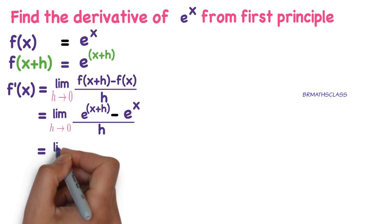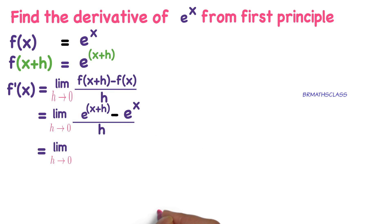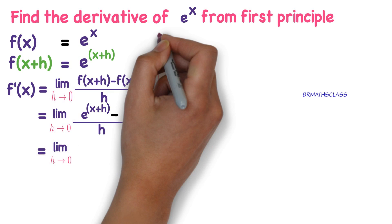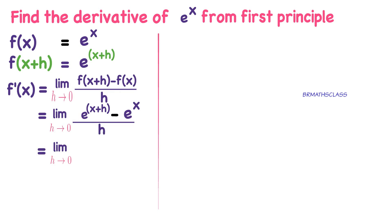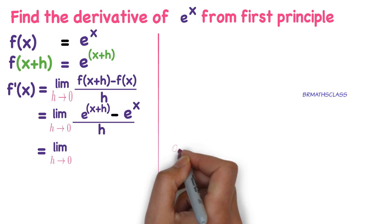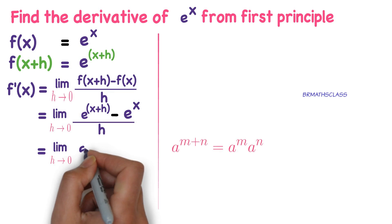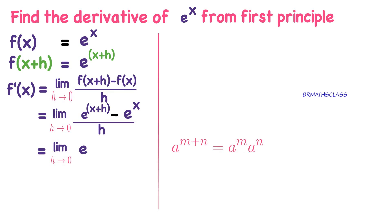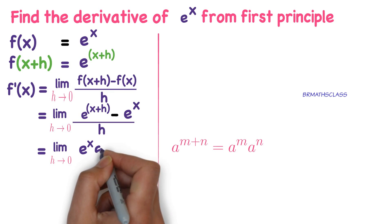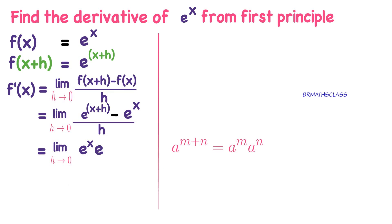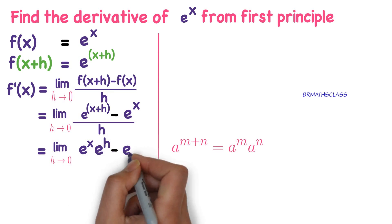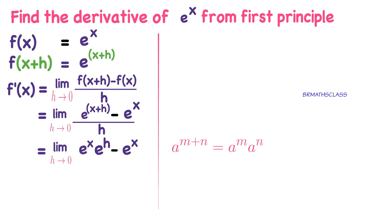This equals limit h tends to 0. See, we know this formula from 7th standard onwards: a^(m+n) equals a^m times a^n. You apply the same formula here. e^(x+h) can be written as e^x times e^h minus e^x, whole divided by h.